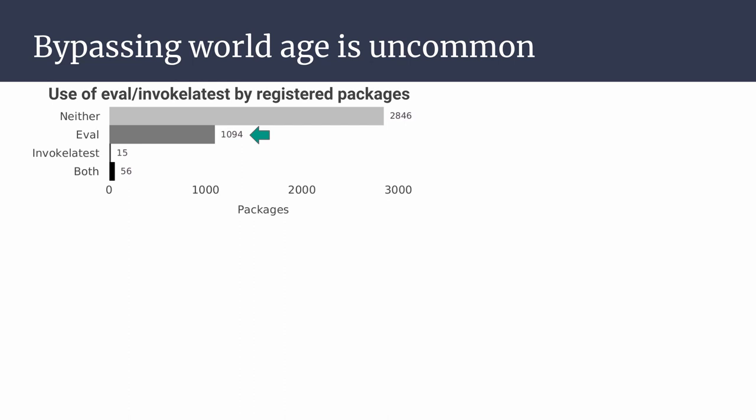Most of them are not related to bypassing world age. For instance, one popular programming pattern is the generation of boilerplate code. In this example, eval is used for metaprogramming to define new methods in the gen function. Gen itself is called at the top level.